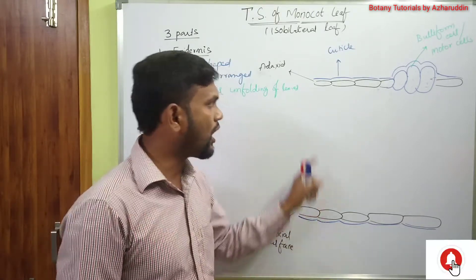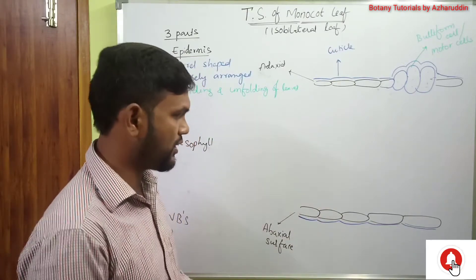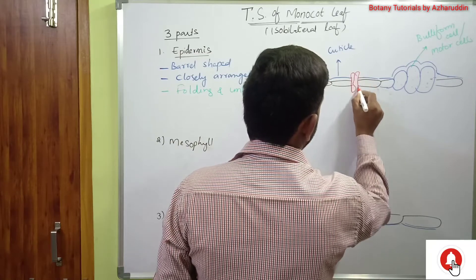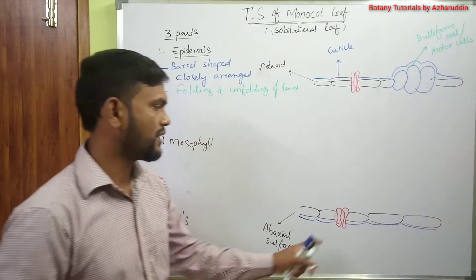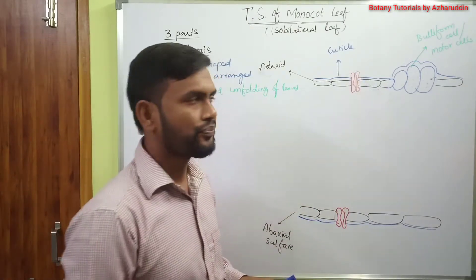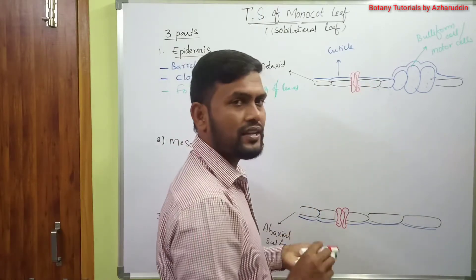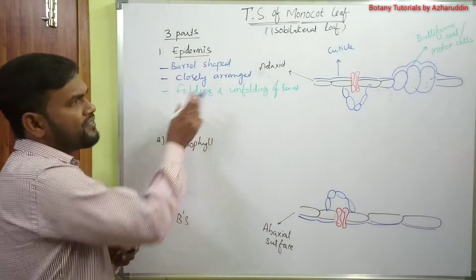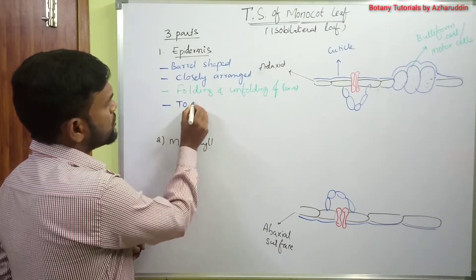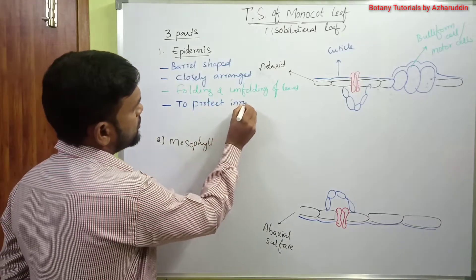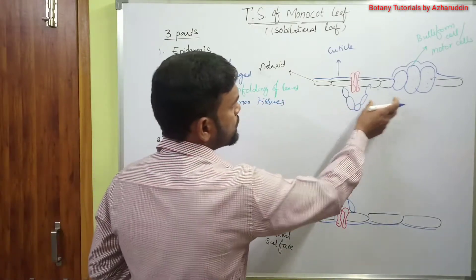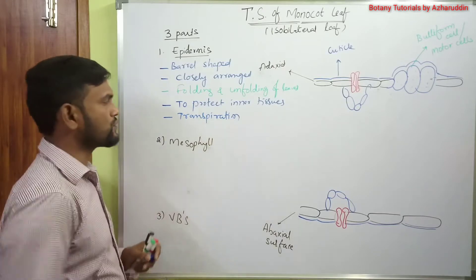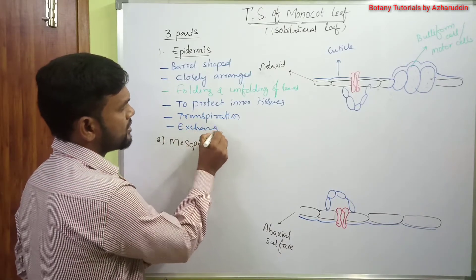The number of stomata is equal on both epidermal layers. The guard cells are generally dumbbell-shaped. Below the stomata, there is an air chamber or air cavity. The main function of the epidermis is to protect inner tissues, and it is also involved in transpiration and exchange of gases.